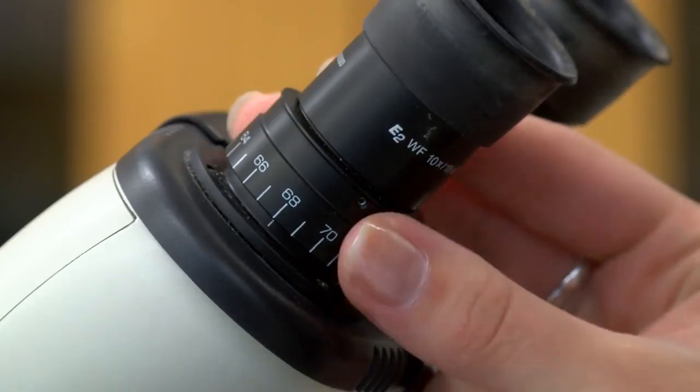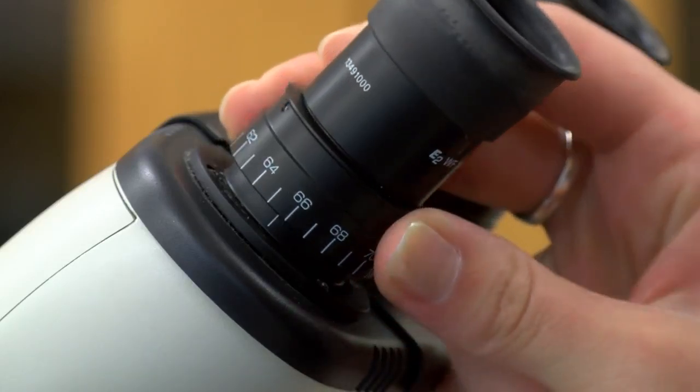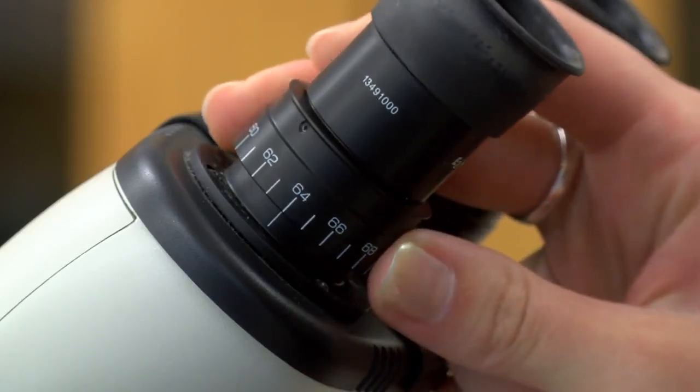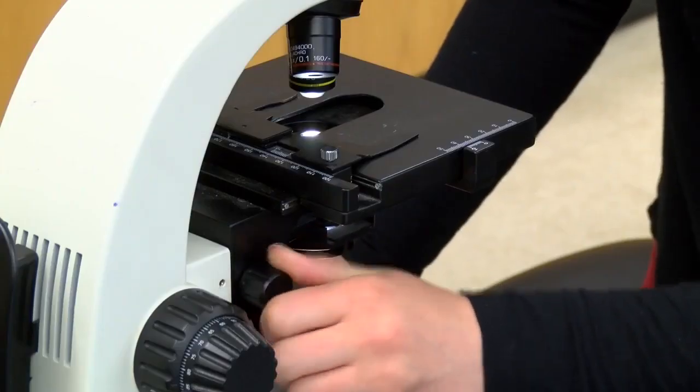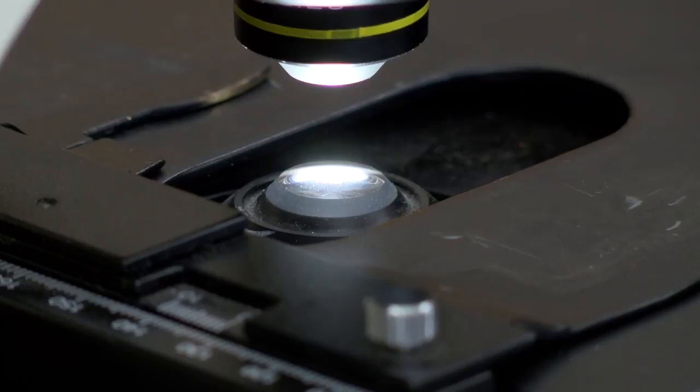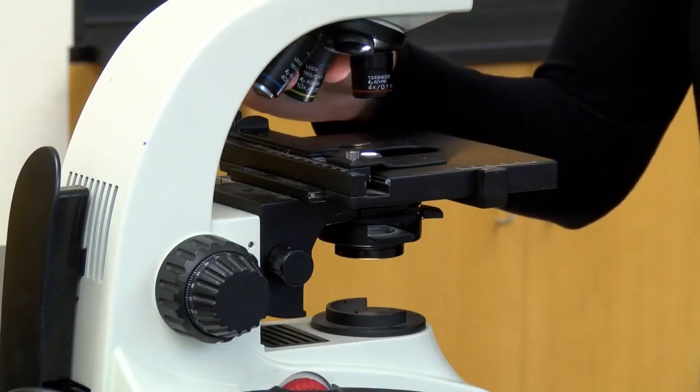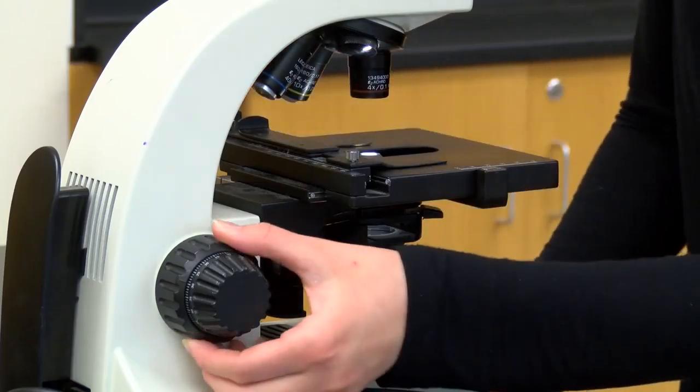Check the ocular lenses and turn them until the number 64 lines up with the white line below the rotating part of the lens. Check that the condenser lens is just below the stage. Put the objective lens on low power and move the stage to its highest position.